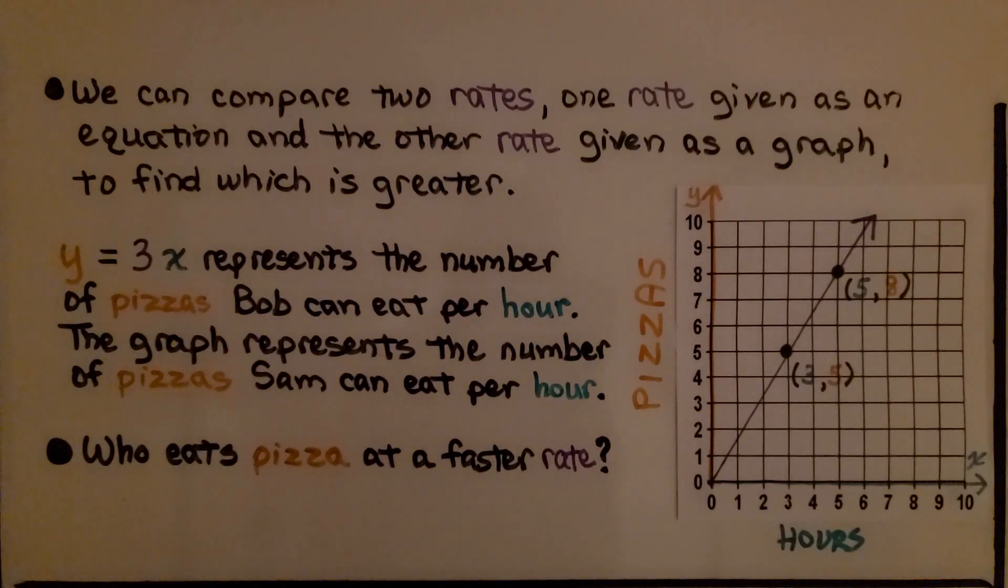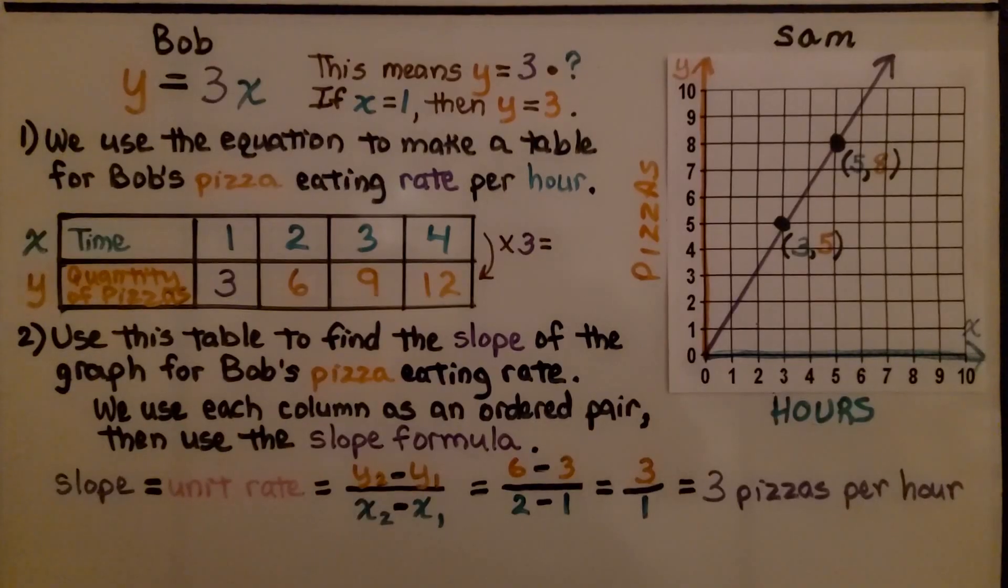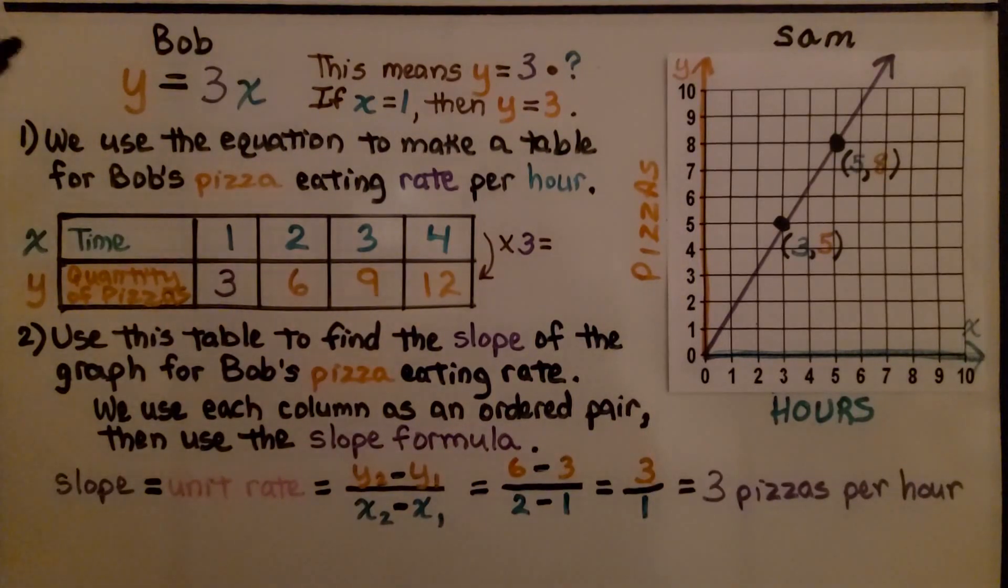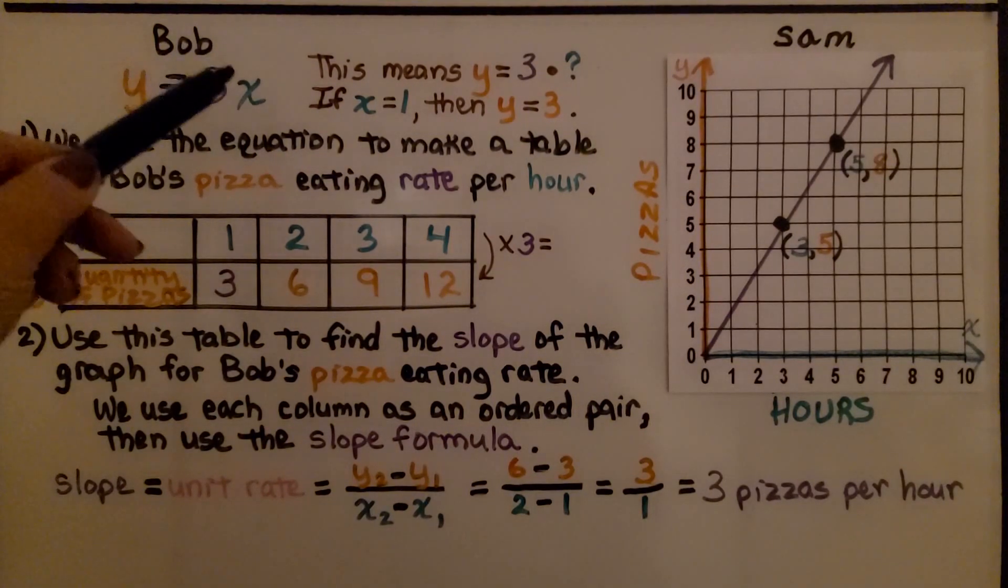We can compare two rates, one rate given as an equation and the other rate given as a graph, to define which is greater. We have y equals 3x represents the number of pizzas Bob can eat per hour. The graph represents the number of pizzas Sam can eat per hour. Who eats pizza at a faster rate? We're given an equation for Bob and a graph for Sam.